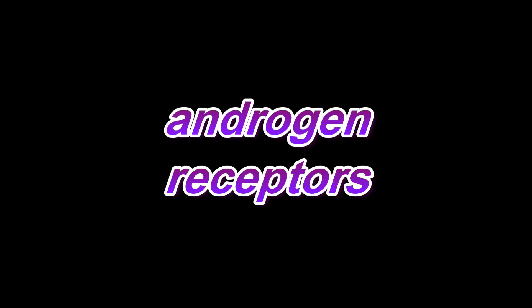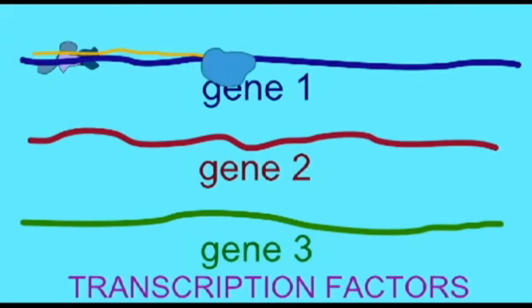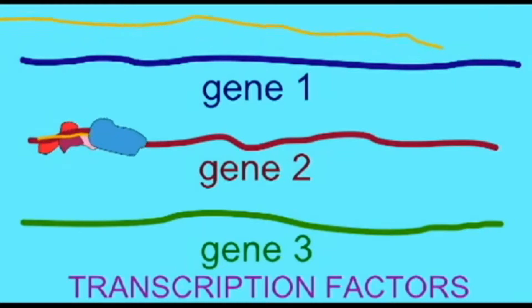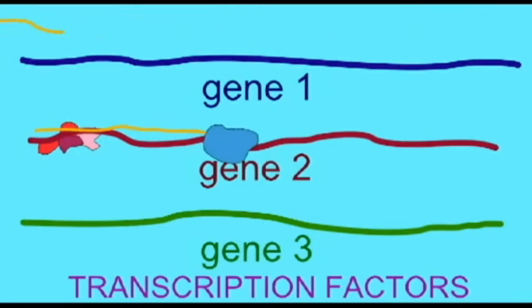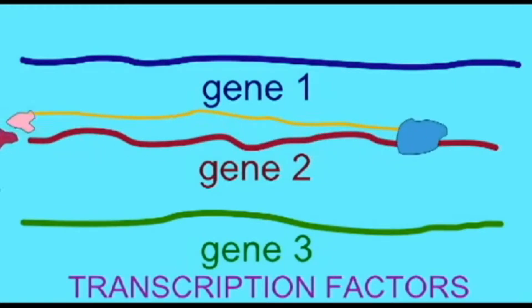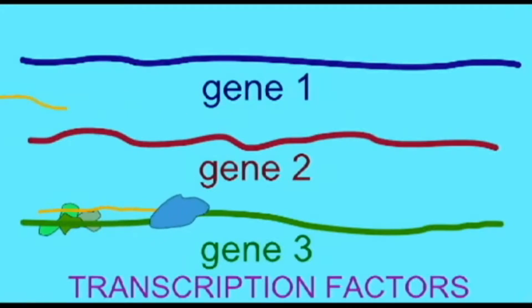The androgen receptor is a transcription factor which binds DNA but only at specific sequences. The sequence thymine, guanine, thymine, thymine, cytosine, thymine is the site where it binds — an androgen response element.